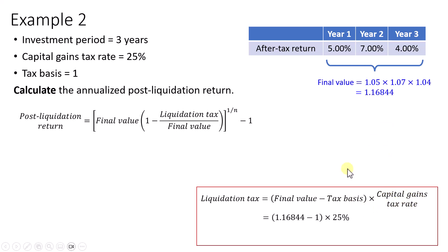So we take 1.16844 minus 1 and multiply by 25%, that gives us 0.04211. Then we substitute this back to the formula. When you expand the bracket, you have 1.16844 minus 0.04211, then raise it to the power 1 over 3 minus 1, that gives you 4.045% per annum.